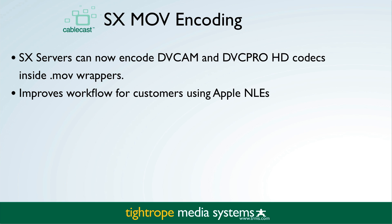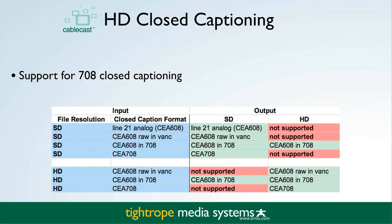Cablecast 5.1 adds some additional encoding options to SX video servers. We can now encode DVCam and DVC Pro HD files inside an MOV wrapper. This allows those files to be used on Apple computers such as Final Cut Pro or Avid editing stations much more easily, and is a great workflow improvement for many customers. We also support HD closed captioning in Cablecast 5.1.